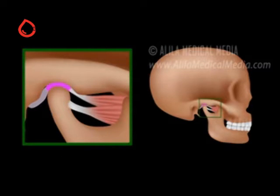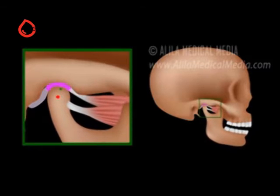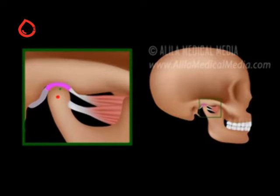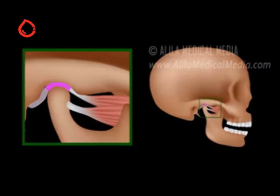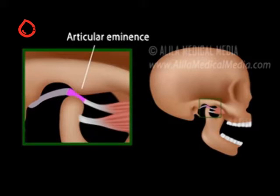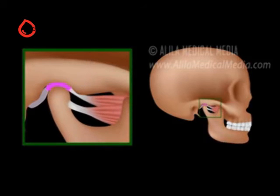The mandible is the only bone that moves when the mouth opens. The first 20 mm of opening involves only a rotational movement of the condyle within the socket. For the mouth to open wider, the condyle and the disc have to move out of the socket, forward and down the articular eminence, a convex bone surface located anteriorly to the socket. This movement is called translation.